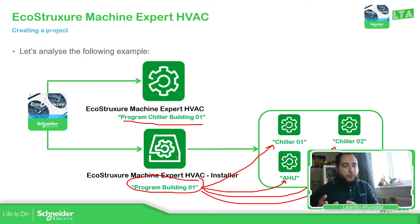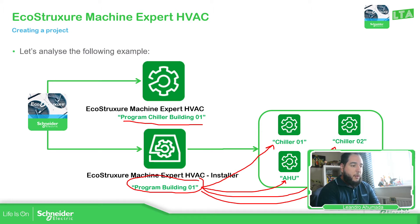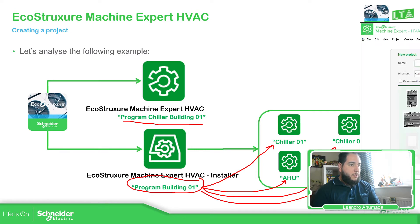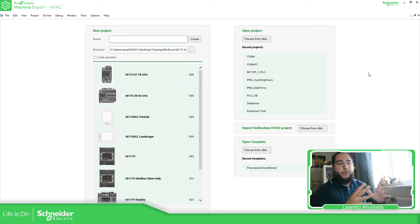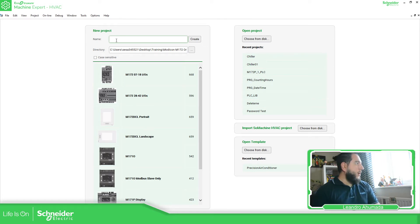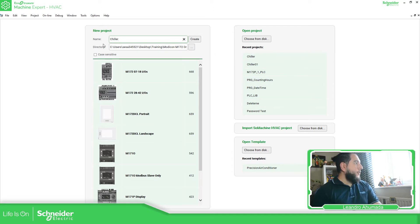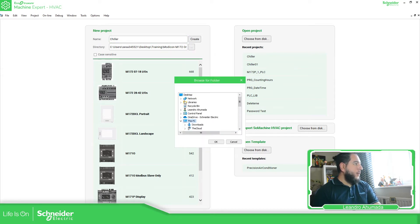Before going into the installer, which can be a little more complicated, I'm going to open the standard HVAC one, just to show you how it looks. So this is the view when you open the EcoStruxure Machine Expert HVAC. In order to create a project, we need to give it a name — for example, 'chiller'. Here we need to find the location.